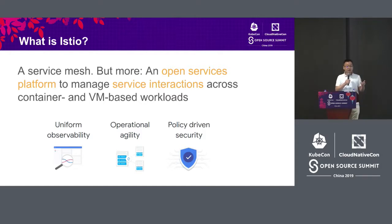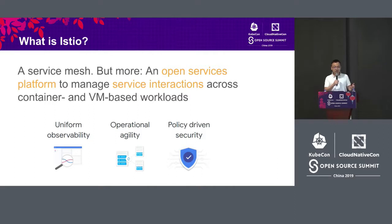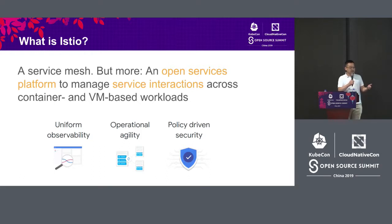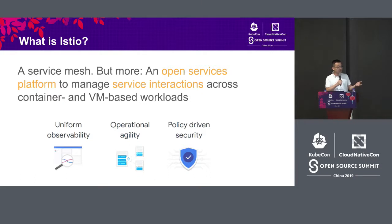Second, operational agility. Istio does advanced load balancing, traffic shifting, and traffic shaping to help you manage your traffic easily and roll out new versions of service safely. Third, policy-driven security. Istio provides declarative policy — it allows you to describe your intent and Istio will enforce the desired security for you. It has features like mutual TLS to encrypt data in transit, and provides protection through authentication, authorization, and audit.